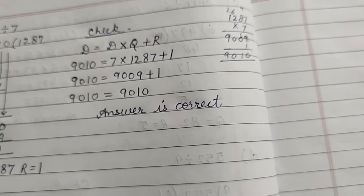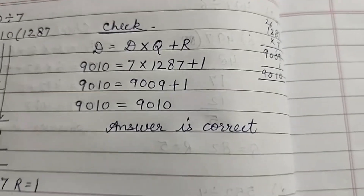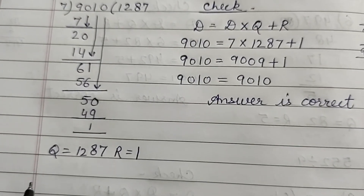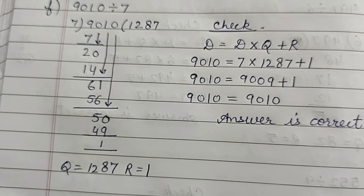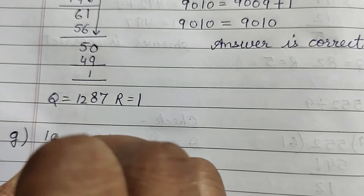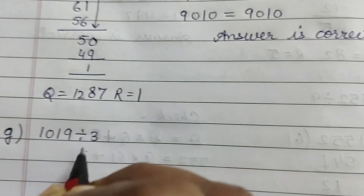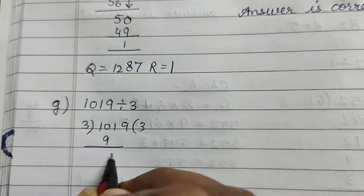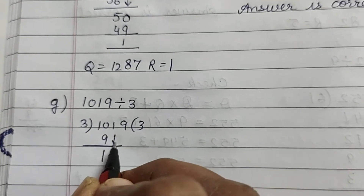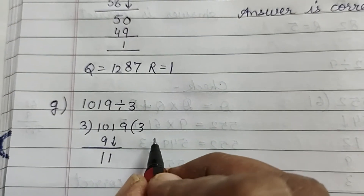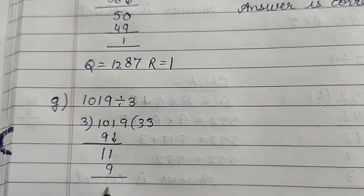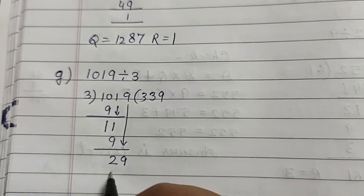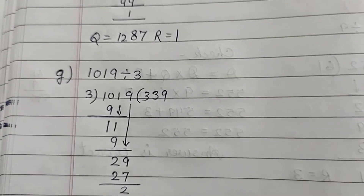Okay, now next part: 1019 divided by 3. 3 into 9 gives 3. 10 minus 9 is 1, bring down 1: 11. 3 into 11 gives 3, remainder 2. Bring down 9: 3 into 29 gives 9, remainder 2. So quotient is 339 and remainder is 2.